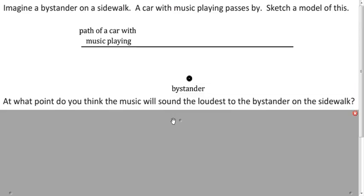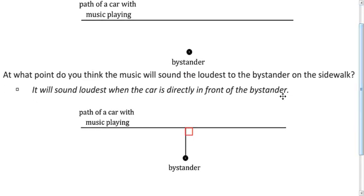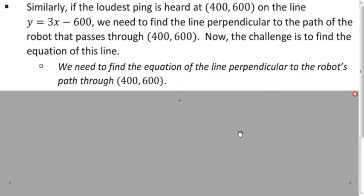So where will the music sound the loudest to the person standing on the sidewalk? That'll be when the car is closest to the person on the sidewalk, and that happens when this segment makes a right angle with the path of the car. It's the same situation here: if we can find the line that's perpendicular to the robot's path at our point (400, 600), we'll be able to find the homing beacon.